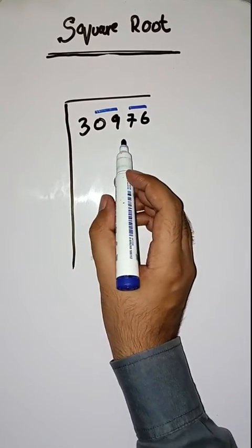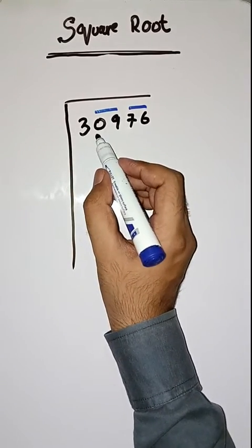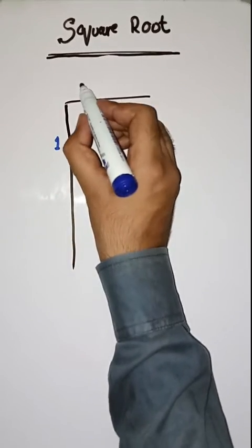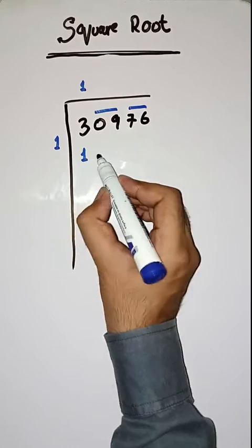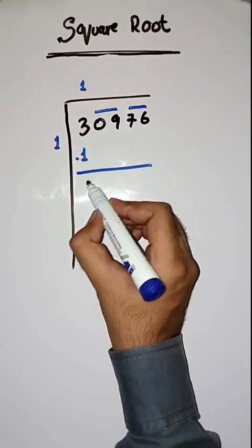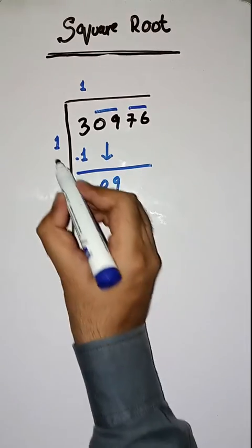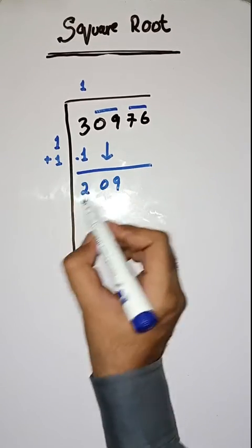Now we start dividing. First we will take a number, one. One squared, one. Three minus one, two. Next pair, zero nine, we have to take it down. Here we have done one plus one, which is equal to two.